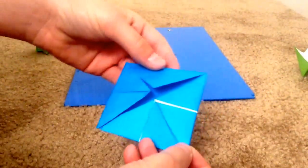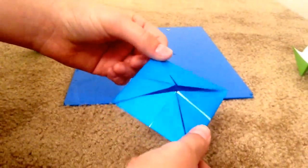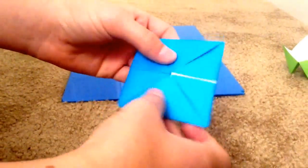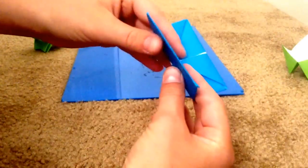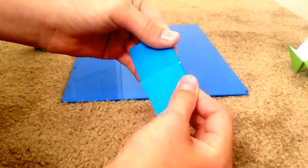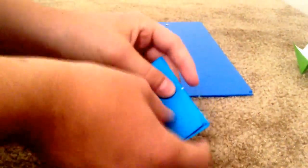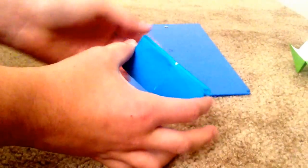Now you should get another square. Once you're done with this, you're going to want to fold it in half, and then you want to pinch the sides.